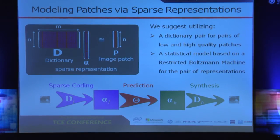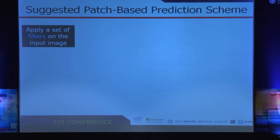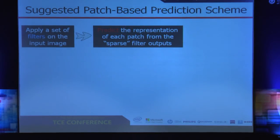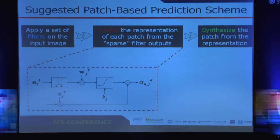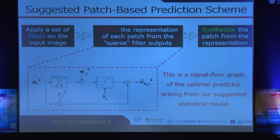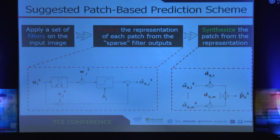We implement this very efficiently. For sparse coding, we simply apply on the input image a set of orthogonal filters, which gives the vector alpha_L for all patches in the image. The optimal predictor arising from our model is the MMSE estimator of each entry in alpha_H given alpha_L, and involves only inner products and nonlinearities, so it's very efficient. For synthesis, we take the predicted coefficients, multiply each by the corresponding atom, and get an estimate for the patch.